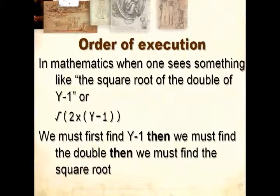In classic mathematics, when one sees something like give me the square root of the double of y-1, you must first find y-1, then we must find the double, then we must find the square root. It looks a little bit like we're working backwards here.